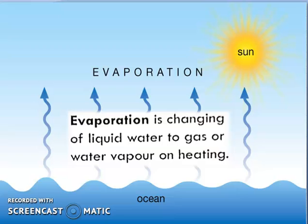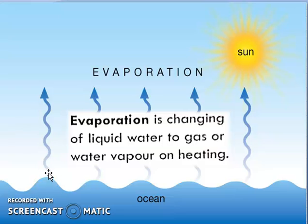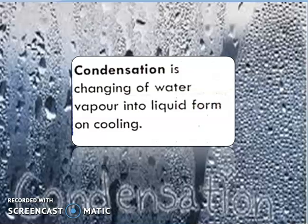Next is condensation. The evaporated water, which is gas, is light, so it rises up. When it reaches a particular height, condensation occurs. What is condensation? It is the opposite of evaporation. You can see droplets in this picture.